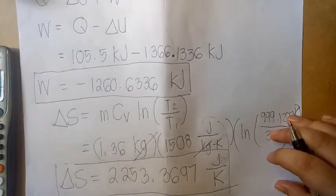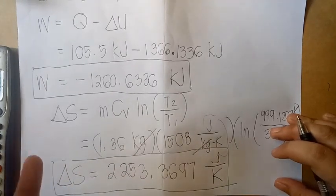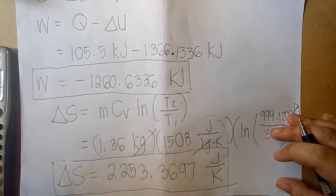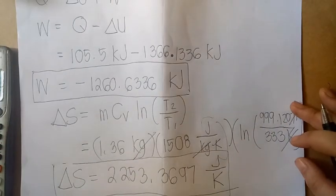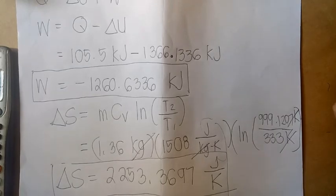If you want to convert into kilojoules per kelvin you can move three decimal places, but the problem didn't mention it so this is okay. That's all for now, goodbye and thanks.